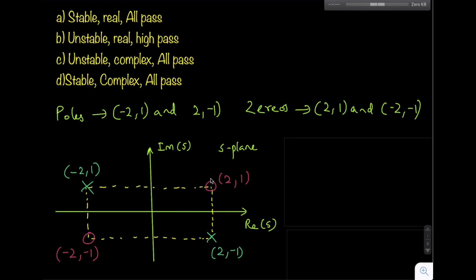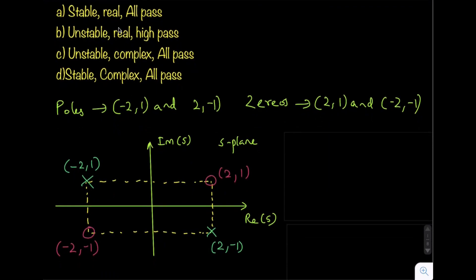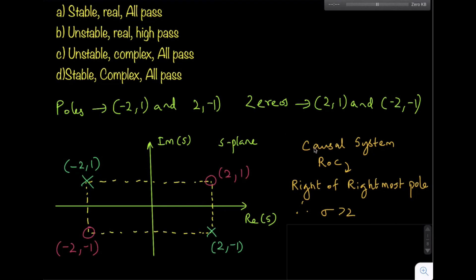The key phrase in the question is 'the causal realization of a system.' For a system to be causal, the condition on the ROC is that the ROC should be to the right of the rightmost pole. Here the rightmost pole is at (2,-1).